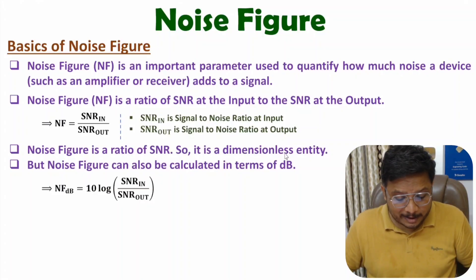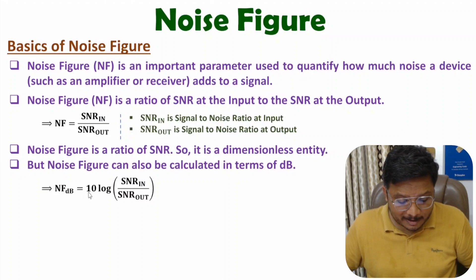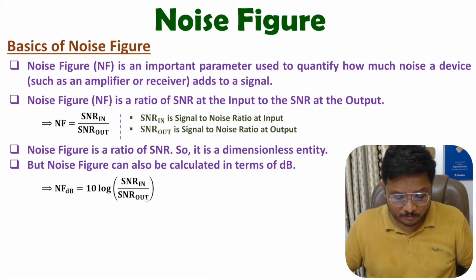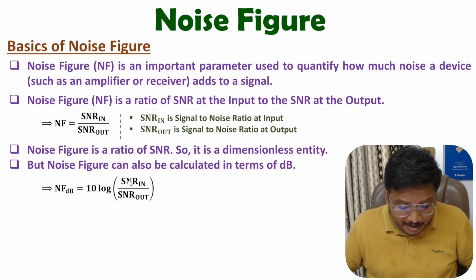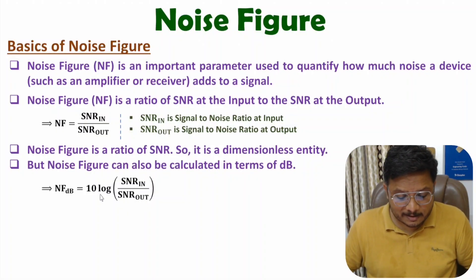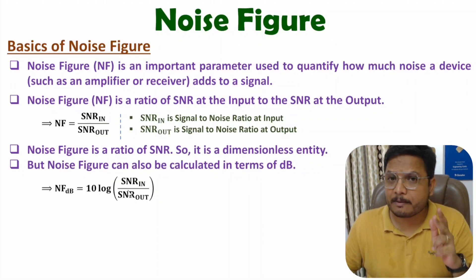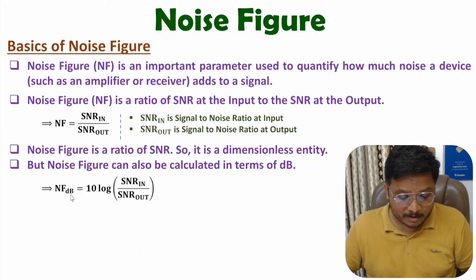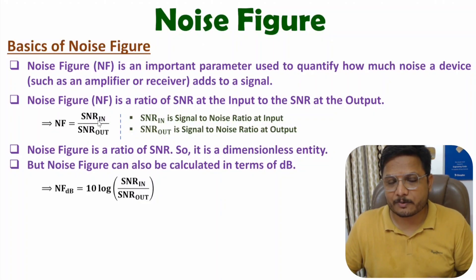Sometimes we calculate noise figure in terms of decibels. If you want to calculate noise figure in terms of dB, then that will be 10 log of (SNR at input divided by SNR at output). One can also calculate this as SNR in dB at input minus SNR in dB at output, because log(A/B) = log A − log B. So by subtraction you can identify noise figure in dB, or by taking a ratio you can identify it as a value.